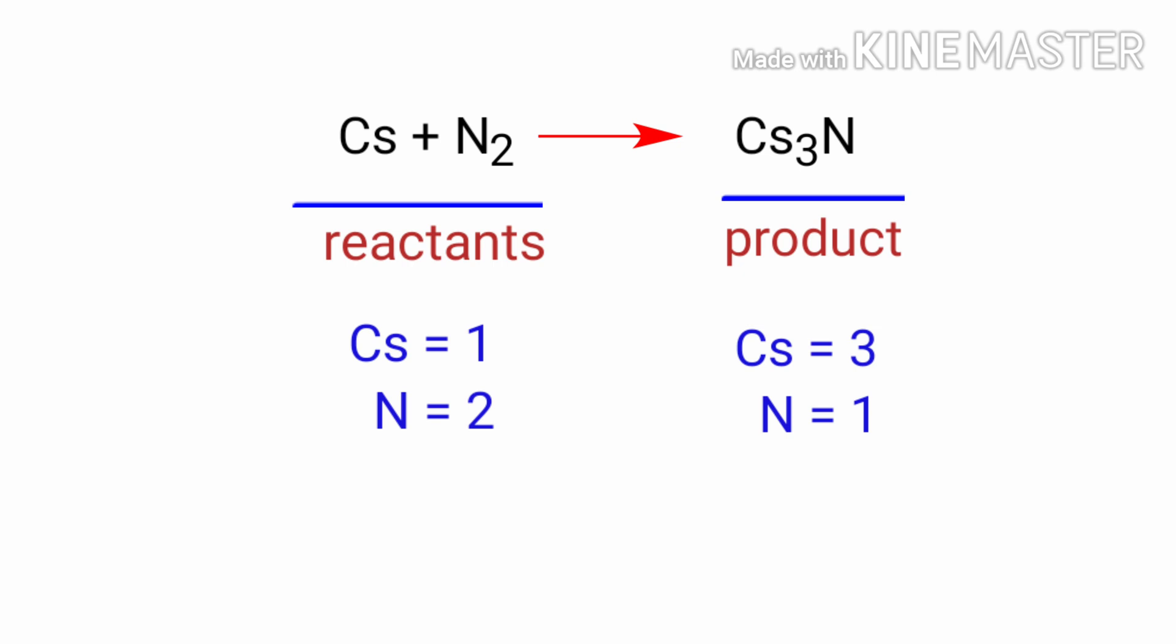To balance the chemical equation, we need to make use of coefficients. A coefficient is a number that we place in front of a chemical formula.